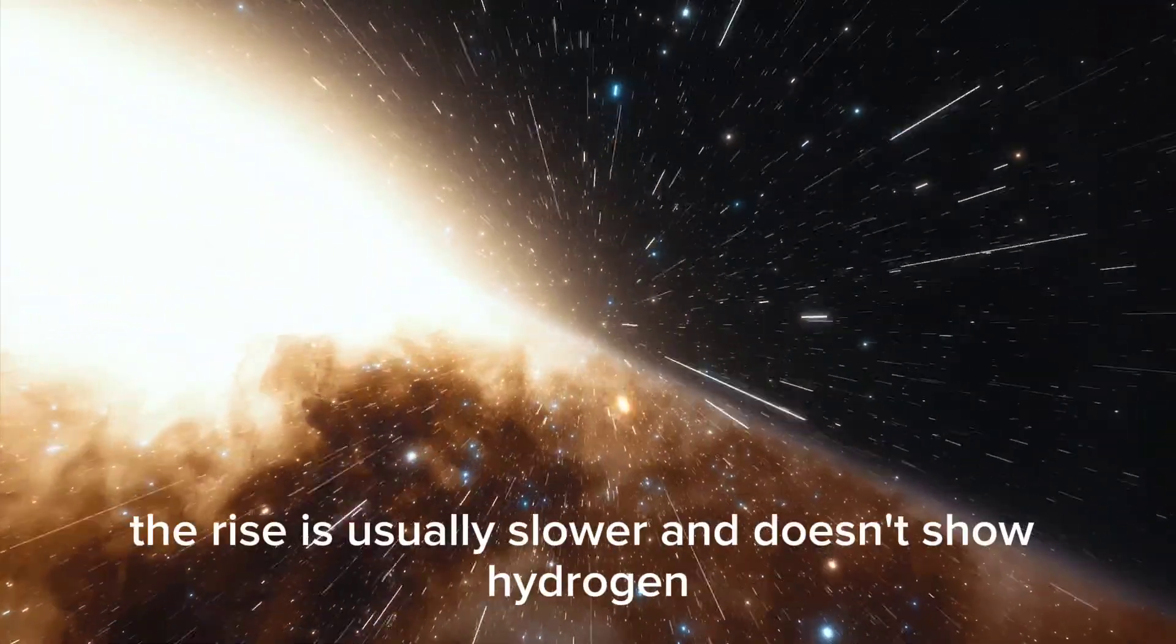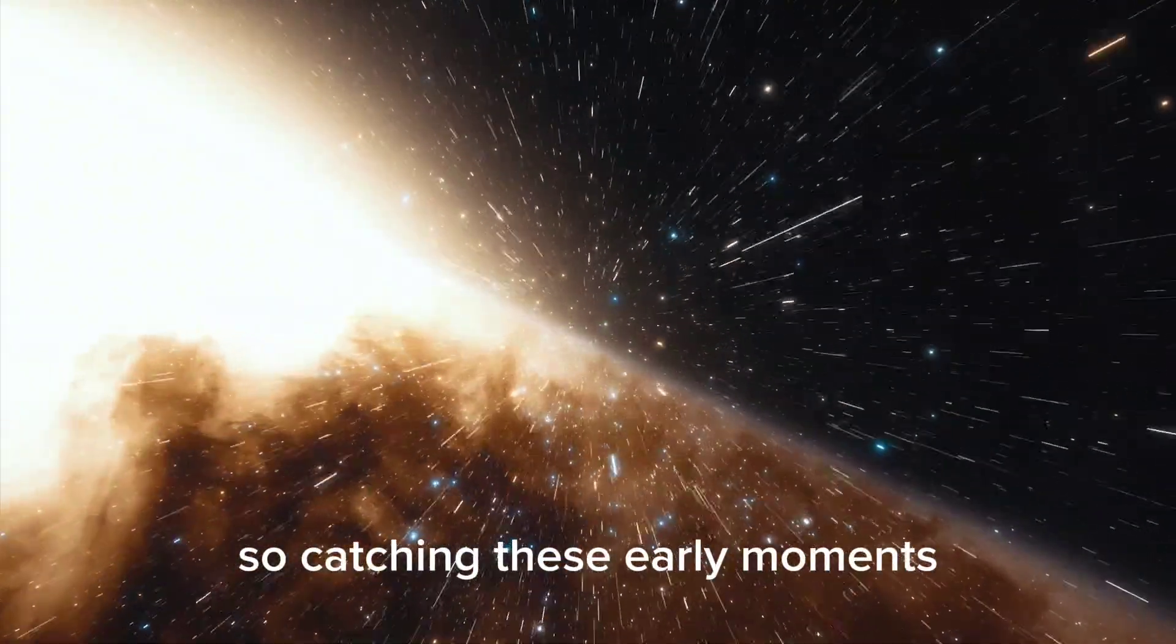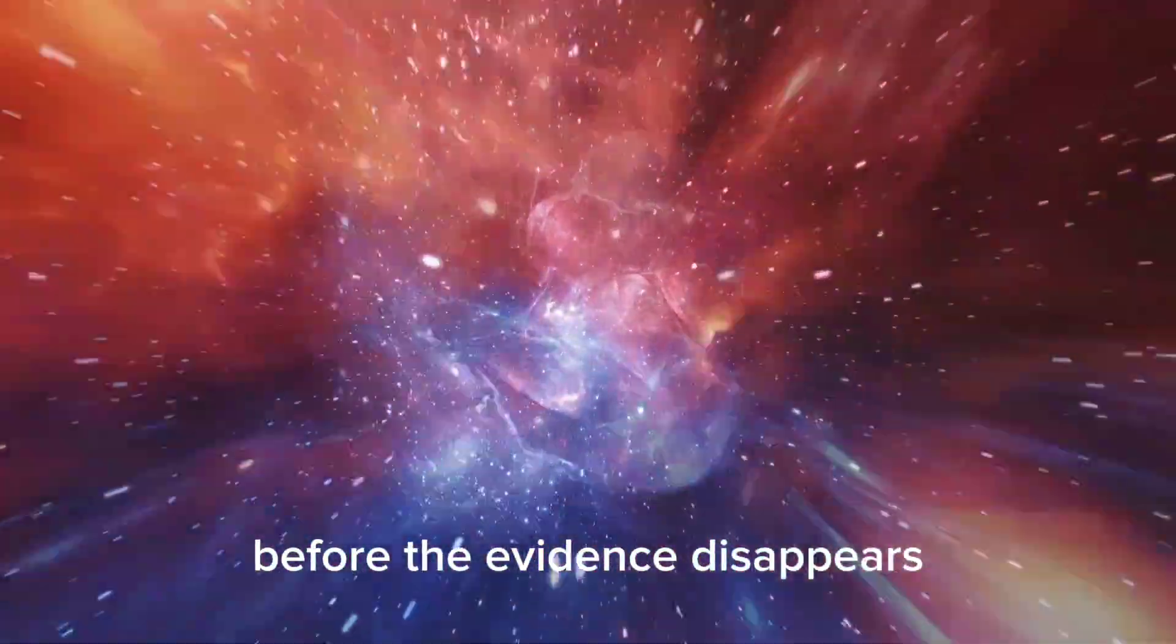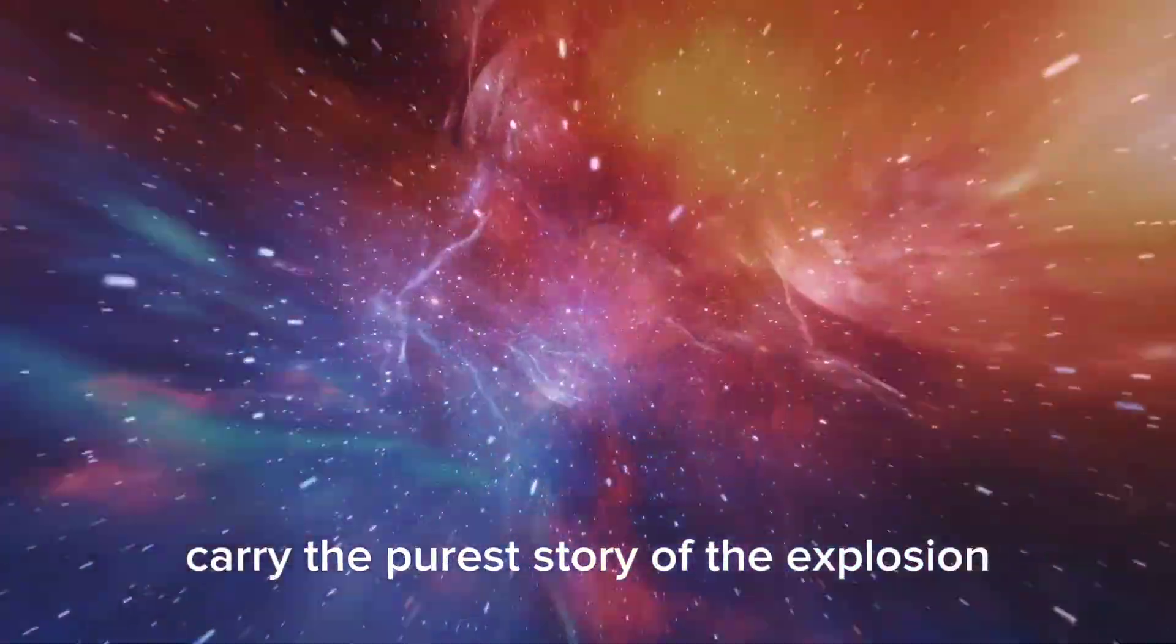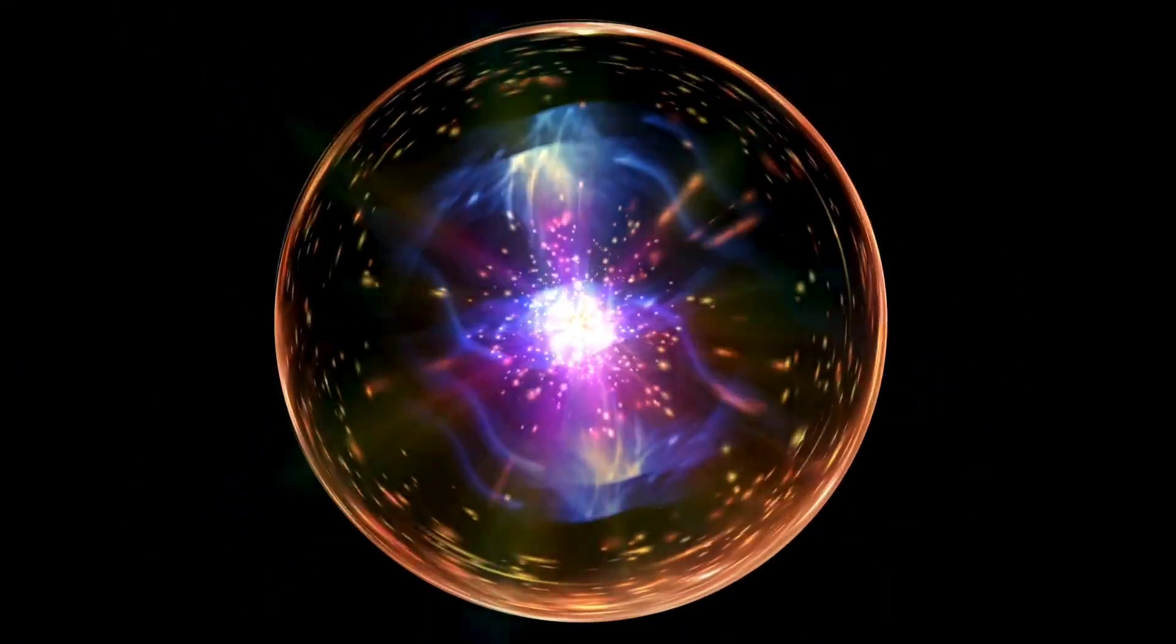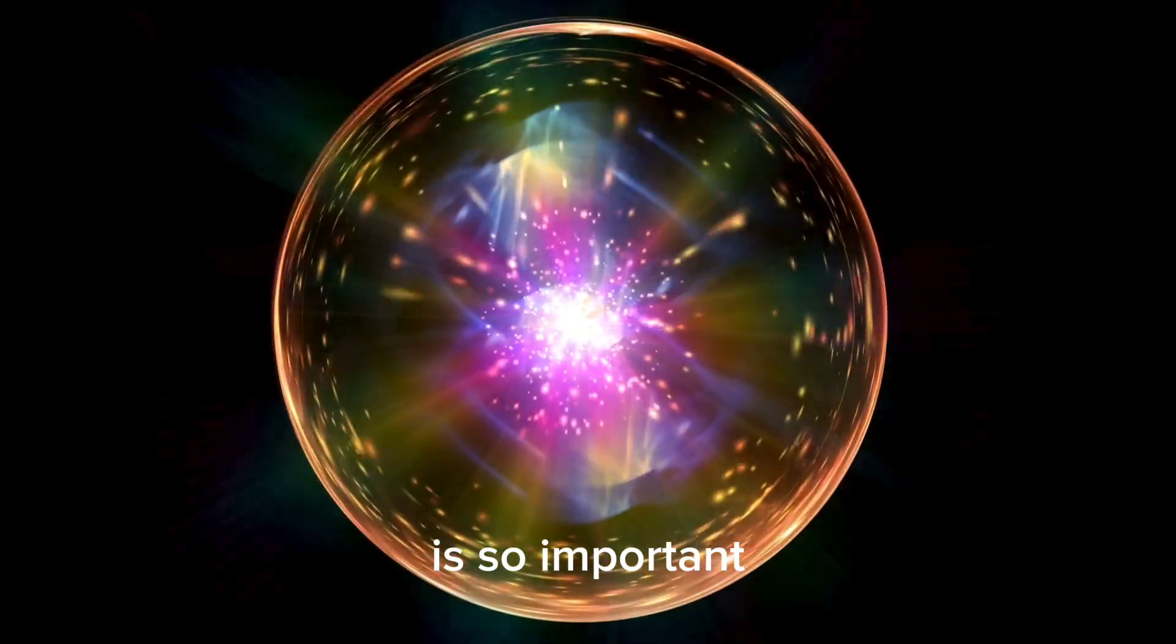In a type IA, the rise is usually slower and doesn't show hydrogen. So, catching these early moments is like getting to the crime scene before the evidence disappears. The earliest photons carry the purest story of the explosion, untouched by later events. This is why Webb's potential capture of the first infrared minutes is so important.